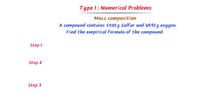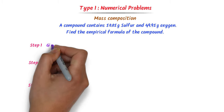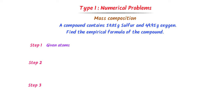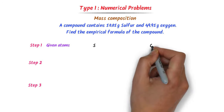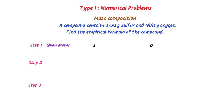In the first step, I write the given atoms — sulfur and oxygen — and their respective gram atomic masses. The gram atomic mass of sulfur is 32 grams and that of oxygen is 16 grams.